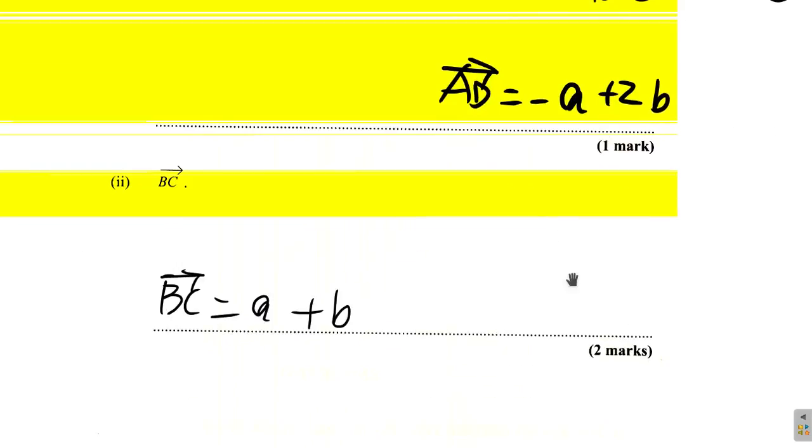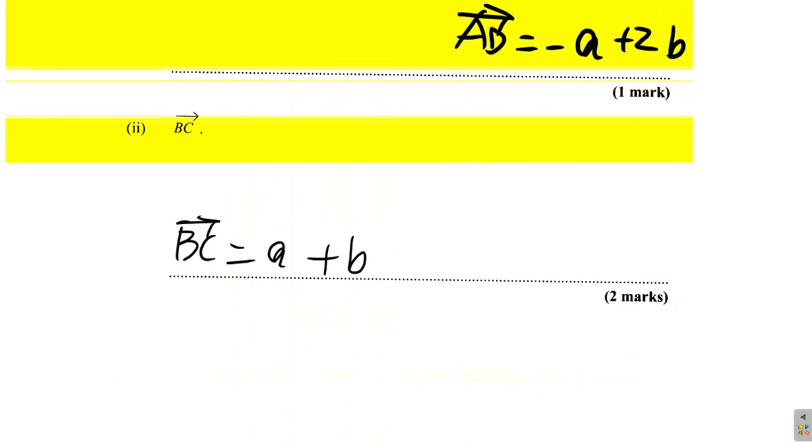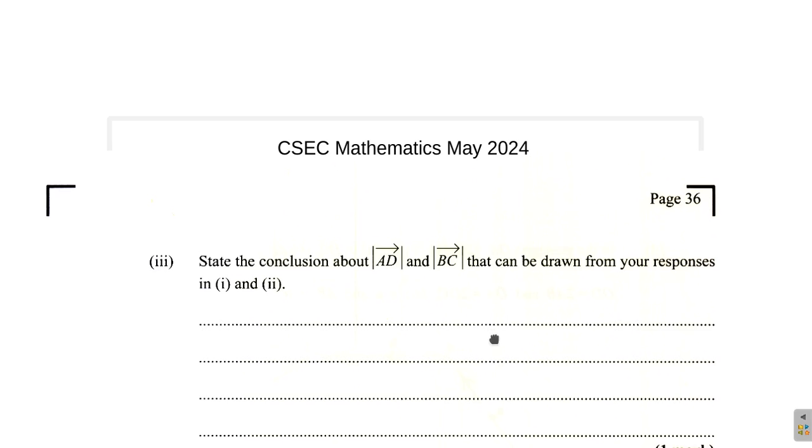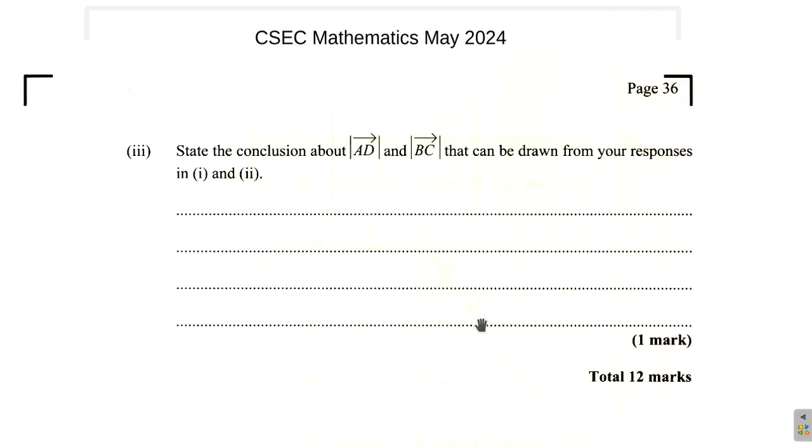So that is that. What else do they say? Ah, look at this. Now they say state the conclusion about AD and BC that can be drawn from your responses in terms of one and two. Now let's look at that in our next video. Thank you.